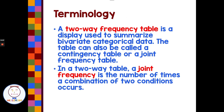A two-way frequency table is a display used to summarize bivariate categorical data. The table can also be called a contingency table or a joint frequency table. In a two-way table, a joint frequency is the number of times a combination of two conditions occurs — basically, matching up two variables to make a description.